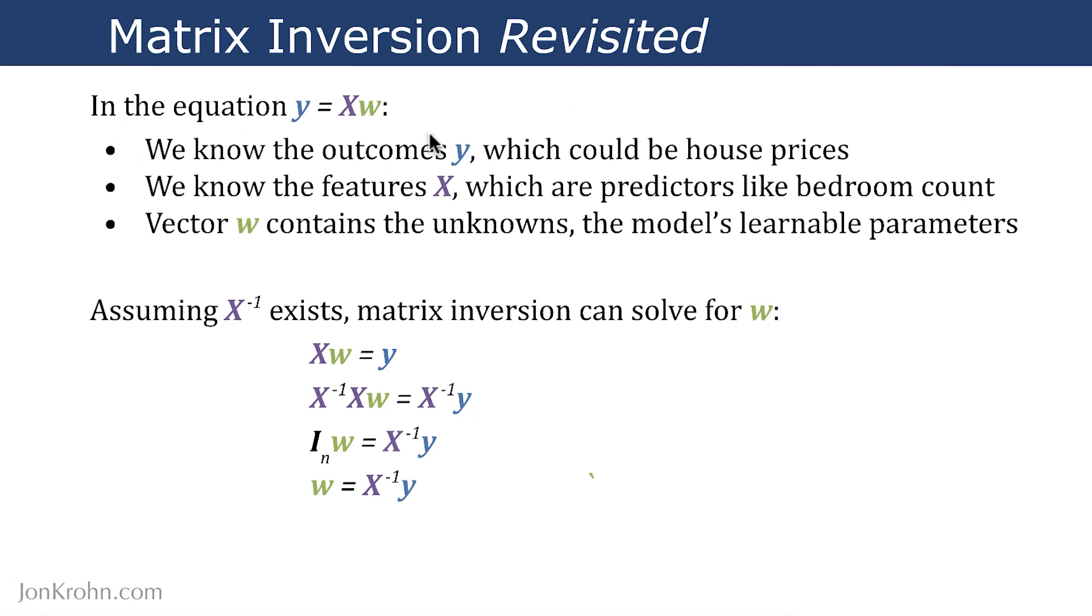As a quick recap, in that equation, we know the outcomes Y. We know we have these values, which could be house prices. We know the features X, which are predictors like bedroom count and distance from school. Vector W contains our unknowns, the model's learnable parameters. Assuming that the matrix inverse of X exists, you could use matrix inversion to solve for W. We already talked about this in detail in the intro to linear algebra subject, so I won't talk about this to that same level of detail again.